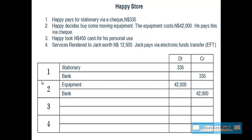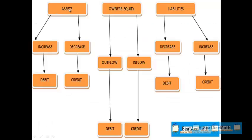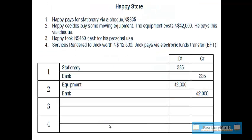Let's look at number three. Happy, who is the owner, took $450 in cash for his personal use. What two accounts are involved? Since Happy is the owner taking cash for personal use, we call that drawings. So drawings is the first item and cash is the second item, because he is taking cash out of the business. Cash is also an asset, and if an asset decreases we put it on the credit side. Drawings is an owner's equity item and it's an outflow because money is flowing out of the business, therefore drawings should be debited. Our answer: Debit drawings $450, Credit cash $450.